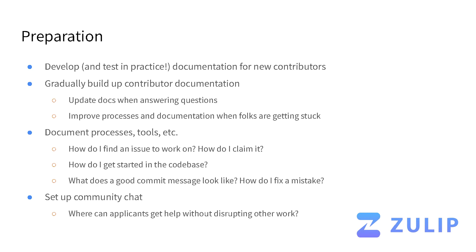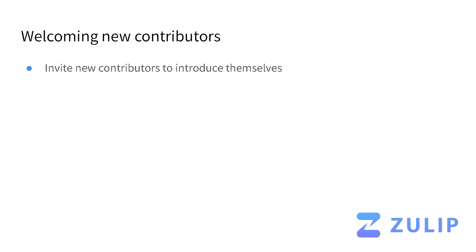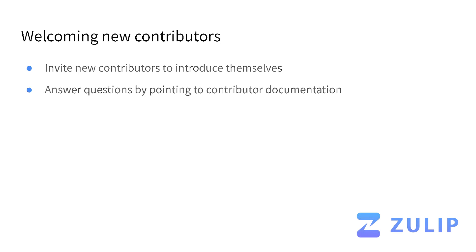You'll want some kind of community chat where applicants can get help, and ideally do so without disrupting other work and discussions happening in the community. Once the application period for GSoC begins, you might have lots of folks coming by and saying hi. It's really nice to have people introduce themselves, and we provide specific instructions for how folks should introduce themselves to the community. Having those resources there can really help, and you can point folks to contributor documentation when they need help.